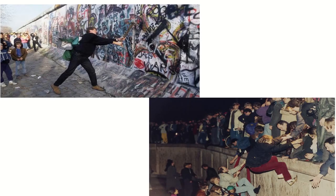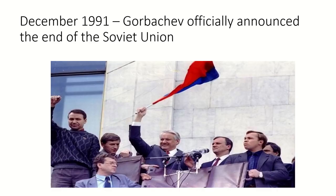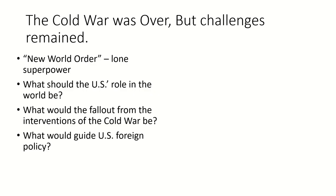After the Berlin Wall came down and new governments were created, the world — long characterized by the threat of two superpowers — came to a peaceful end. In December of 1991, the Soviet Union was declared over and a new world emerged. While the Cold War was over, challenges would remain: How would the U.S. use its status as the lone superpower? What would its role in the world be without communism to fight? What would be the fallout from Cold War wars and interventions? And what new ideas would guide U.S. foreign policy into the new millennium?